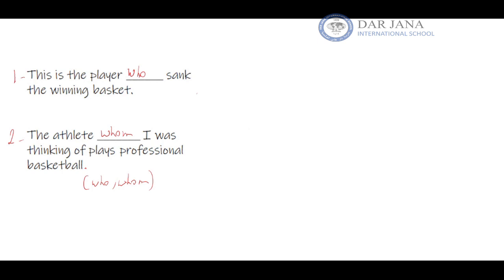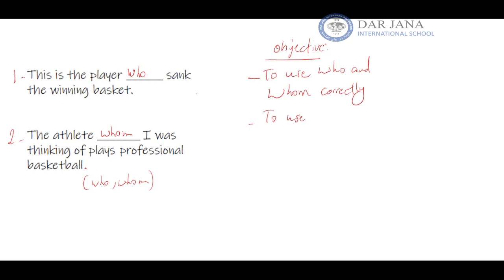The objective of this lesson is for you to be able to use 'who' and 'whom' correctly, and to use pronouns effectively and correctly in writing — and of course this also applies to speaking. The essential question for this lesson is: how can you choose between 'who' and 'whom'?